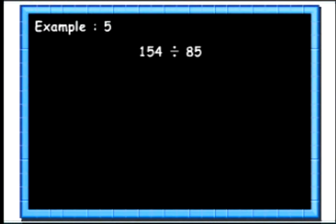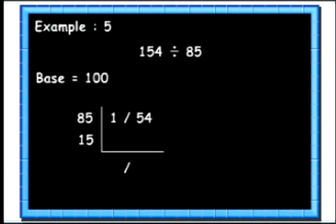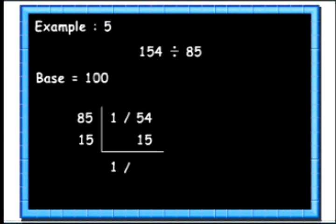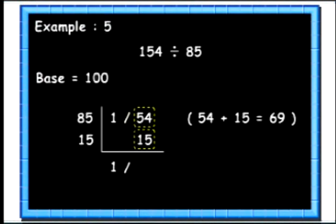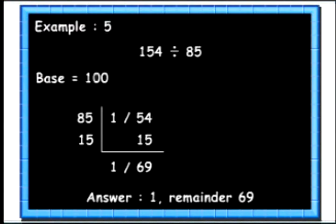Let's see another example. Here we will divide 154 by 85. Again we will take the base as 100 and leave the last 2 digits from right for the remainder stroke. 100's complement of 85 is 15. We write this below 85. Then we bring down the first digit 1 and multiply it with the complement to get 15. We write this 15 below the next 2 digits in the dividend. Finally we add up the last column: 54 plus 15 is 69. So we get the quotient as 1 and remainder as 69.